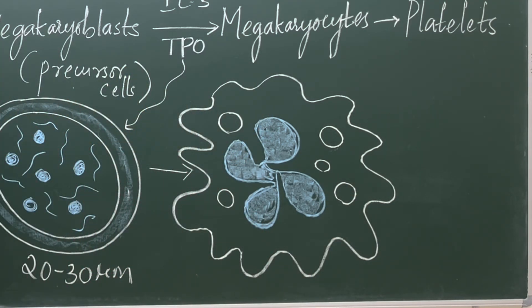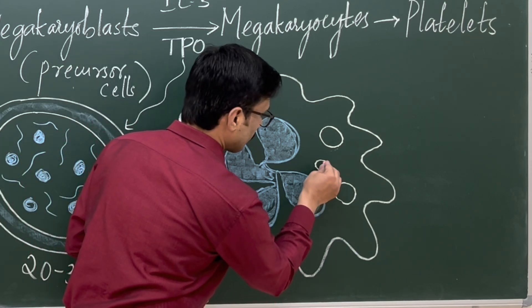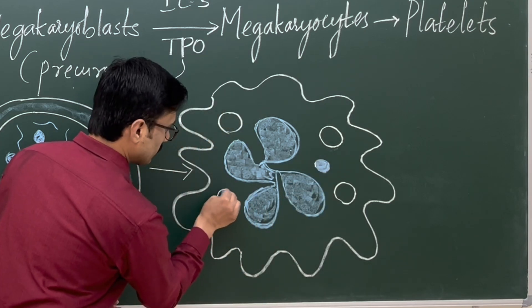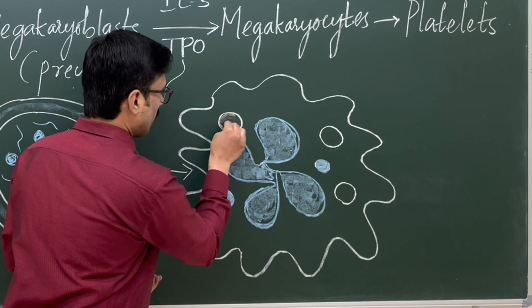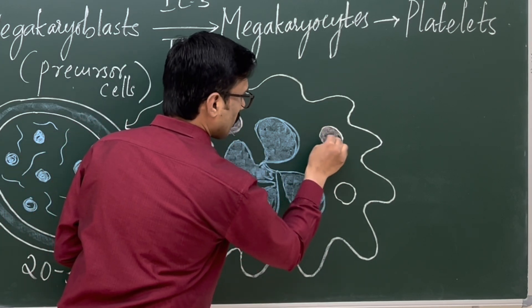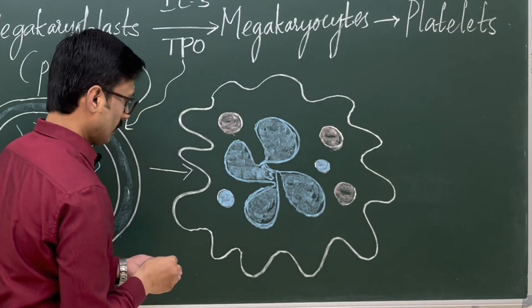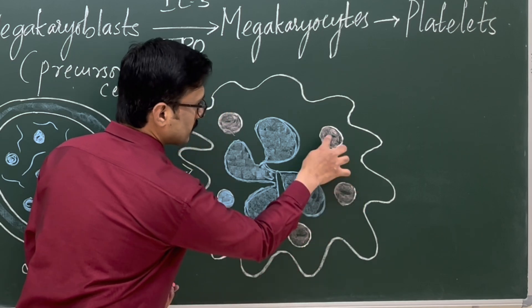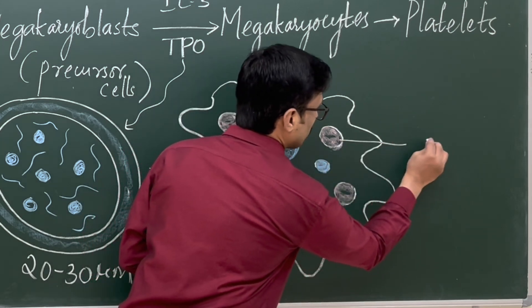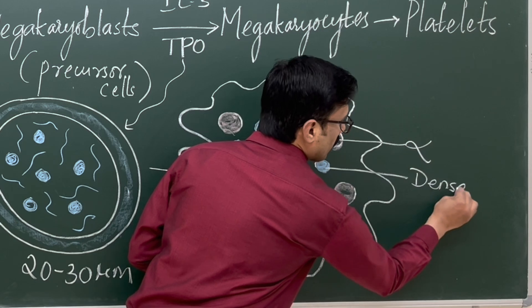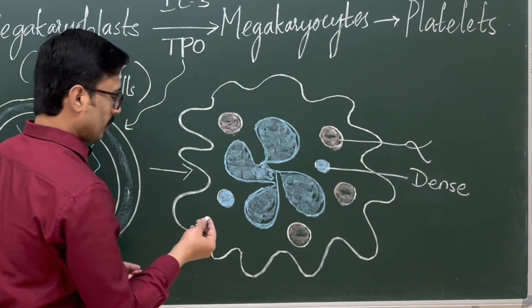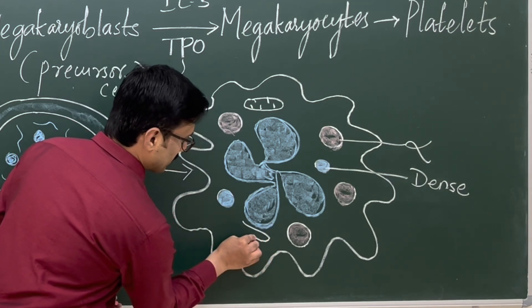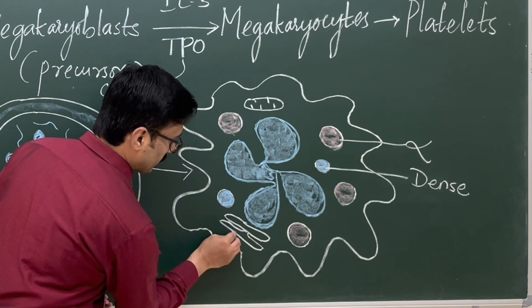The small granules are called delta granules or dense granules. The larger granules are called alpha granules. Alpha granules are bigger and more in number, whereas dense granules are small. The organelles also increase in number — mitochondria become more numerous within the megakaryocytes, along with endoplasmic reticulum and Golgi complex.